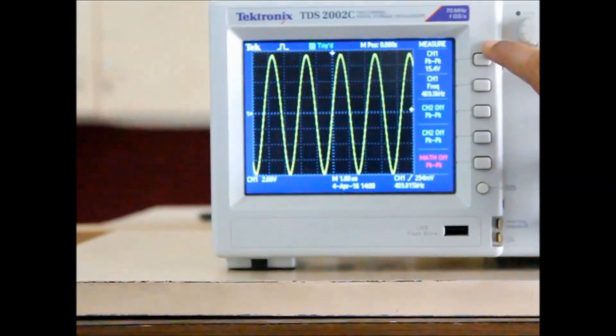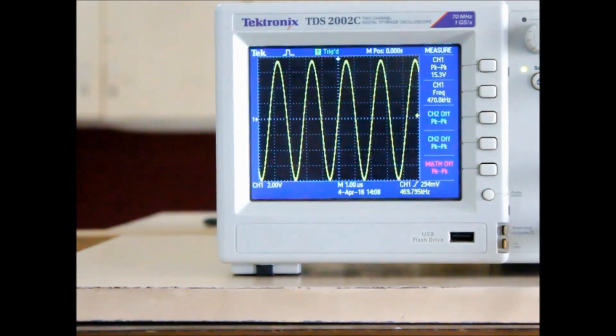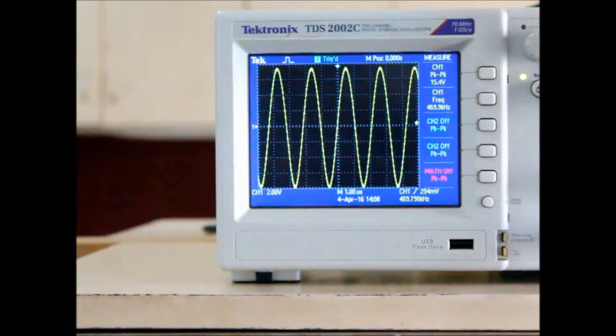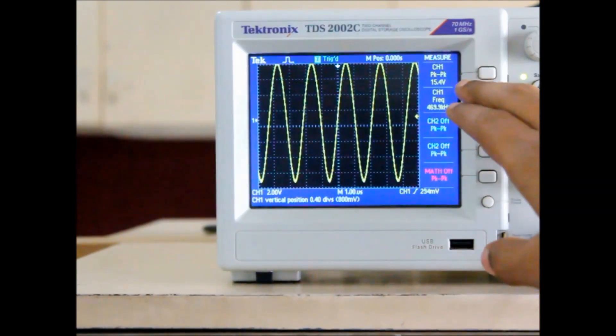Note one thing: on DSO, the voltage is peak-to-peak, so just divide it by two and write it in the observation. So now this is the tuned frequency. Take different readings above and below it.